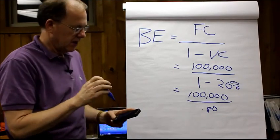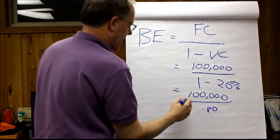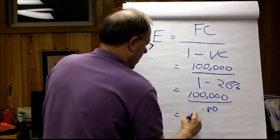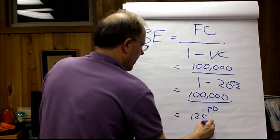So we take a hundred thousand and we divide it by 0.8, that means that our break even is actually going to be $125,000.